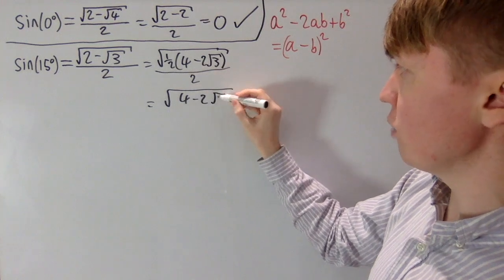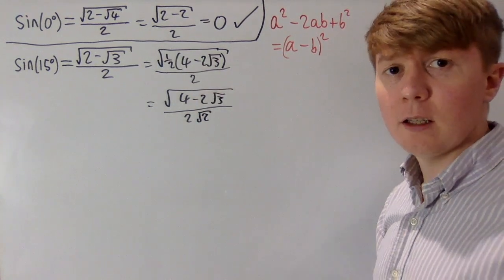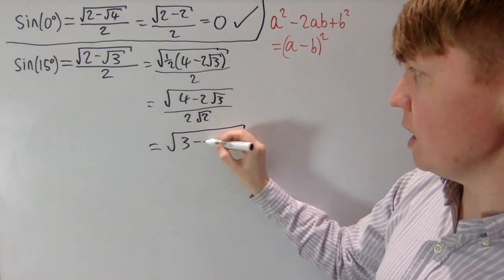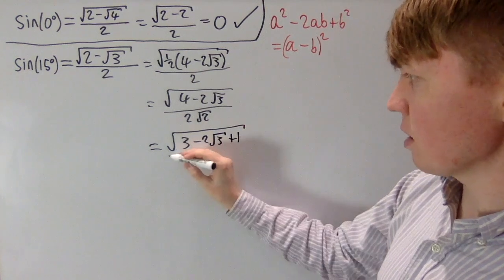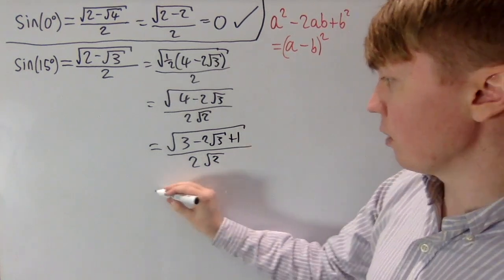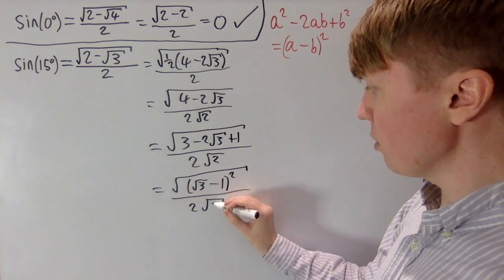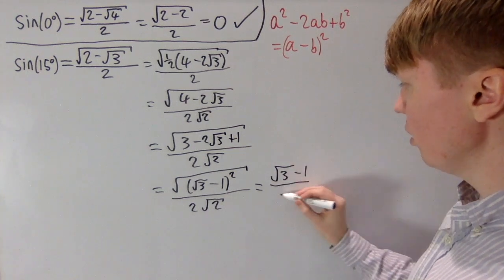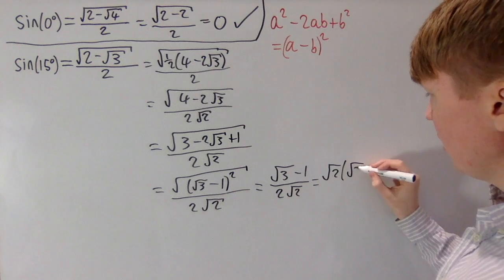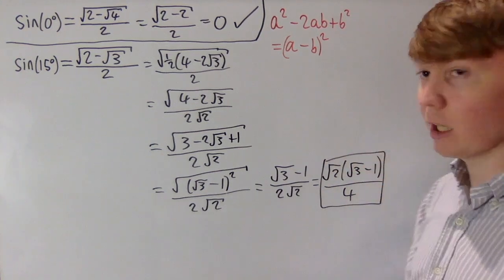Taking the square root of a half and putting it into the denominator, we have 4 minus 2 root 3 in the numerator and 2 root 2 in the denominator. We then split the 4 into 3 and 1: so 3 minus 2 root 3 plus 1, all divided by 2 root 2. This is exactly what you get from expanding (root 3 minus 1) all squared. So we have root 3 minus 1 all over 2 root 2. Then rationalising the denominator by multiplying top and bottom by root 2 gives root 2 into (root 3 minus 1) all over 4. This is our simplified expression for sin 15 degrees.